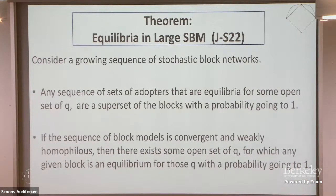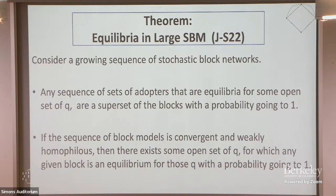If the sequence of block models is convergent and weakly homophilous, you can find some Q for which any particular block is an equilibrium with probability going to one. Once you have this convergence property, you can actually isolate and ensure that some block is an equilibrium for some particular Q. There's a sharp phase transition — below some threshold, things will split almost always; above it, blocks separate out.